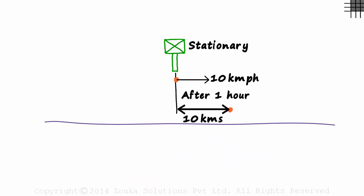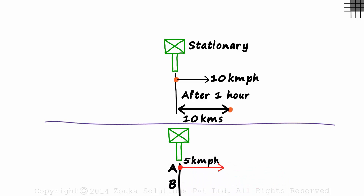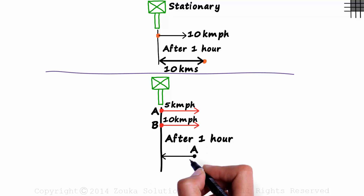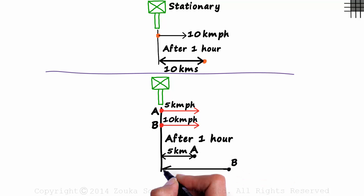Now let's think of another situation. Take this stationary point. From this point, A travels at the speed of 5 km per hour to the right, and B travels in the same direction at the speed of 10 km per hour. Both leave the starting point at the same time. What is the speed of B relative to A? Let's look at their positions after one hour. A will be somewhere here, 5 km away from the starting point. And as B travels at 10 km per hour, it will be here, 10 km away from the starting point.